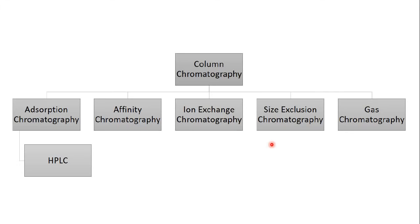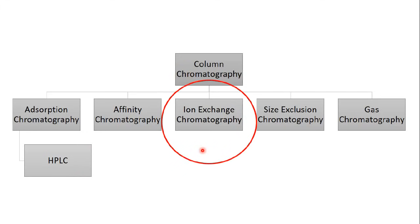As I told you in the previous video, when we say column chromatography we might be mentioning several types of chromatography. In the previous video I mentioned adsorption chromatography and its automated technique, the HPLC, and in this video I'll be speaking about ion exchange chromatography. Ion exchange chromatography is, like other types of chromatography, a separation technique.